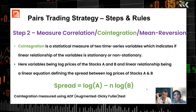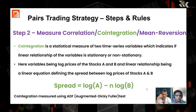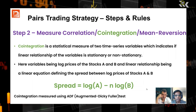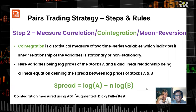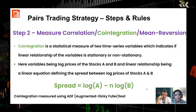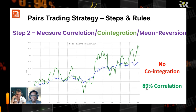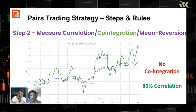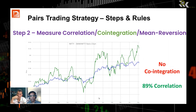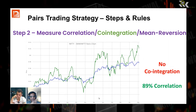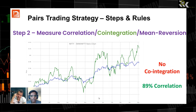Cointegration cannot be calculated in an Excel sheet — you need some coding knowledge, at least in Python, where there are packages to calculate it. What we are measuring is whether the relationship between the two stocks is stationary or not. We want a stationary relationship so that when the spread between them comes back to the mean, we can trade that mean reversion characteristic of the pair. It is very important that they are a mean-reverting pair and not a trending pair.